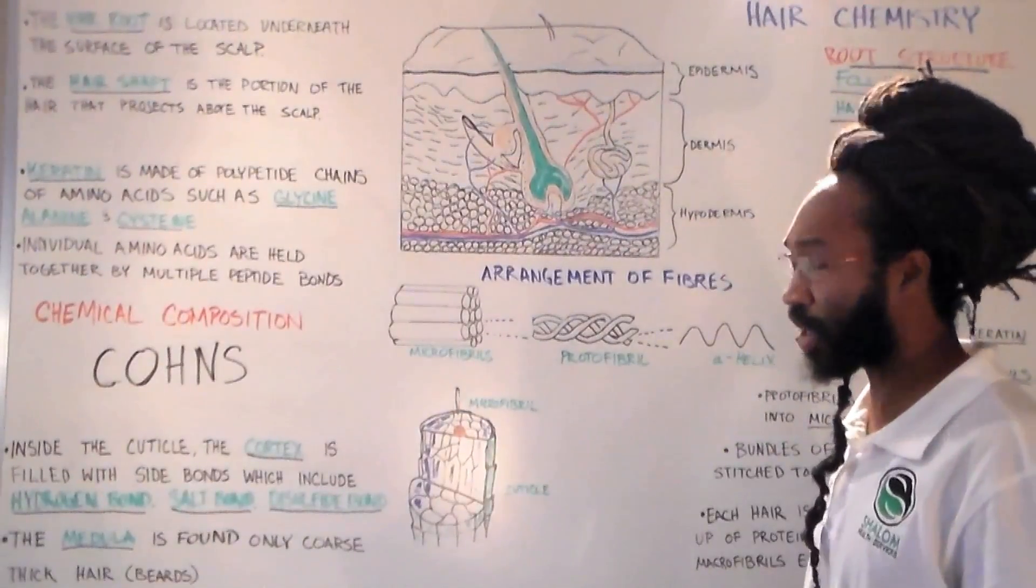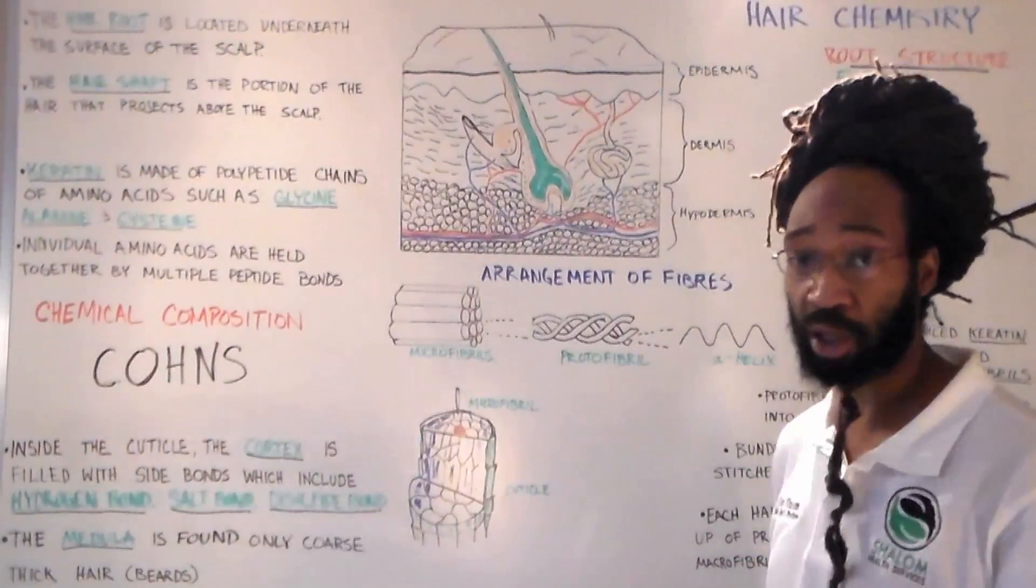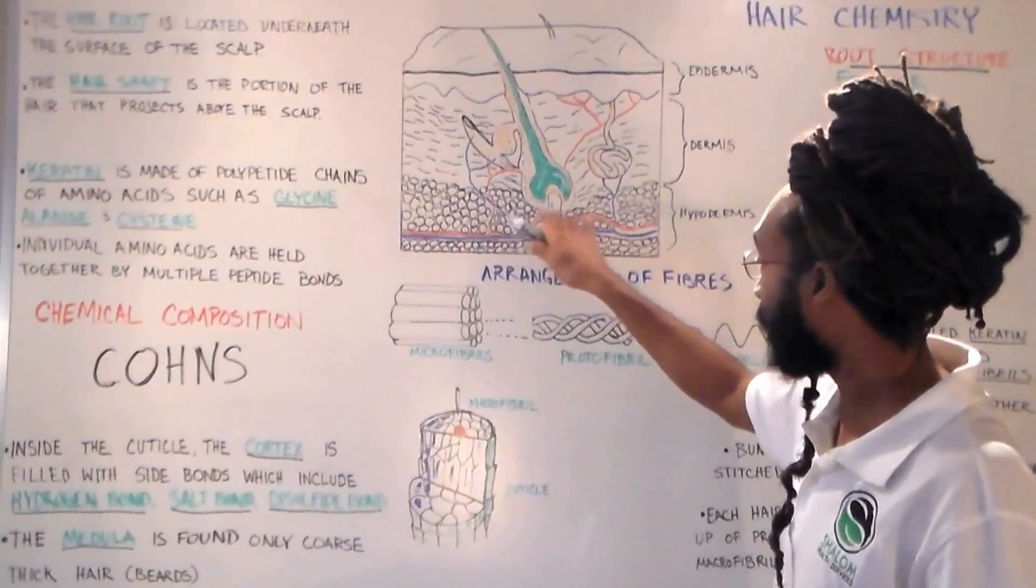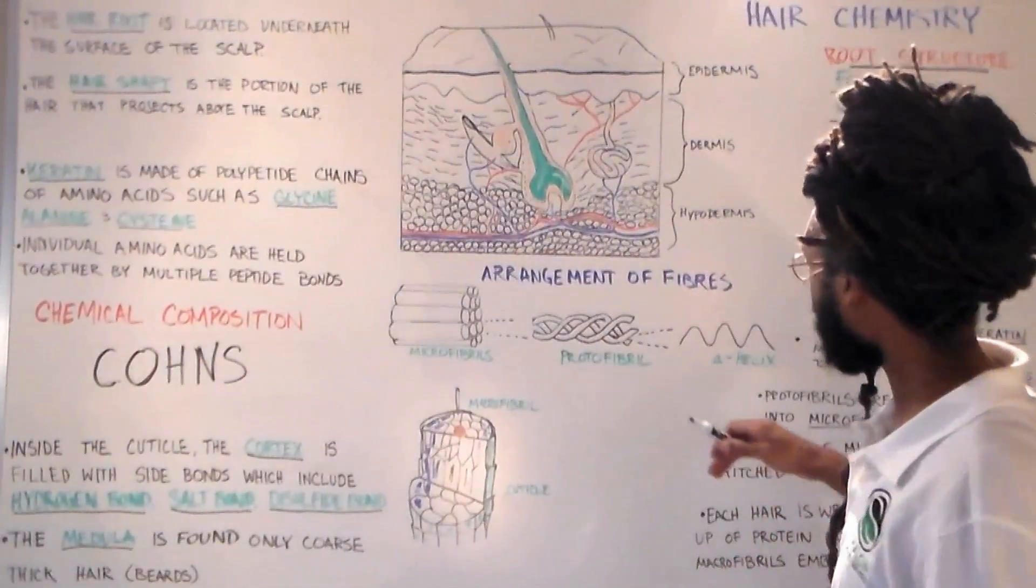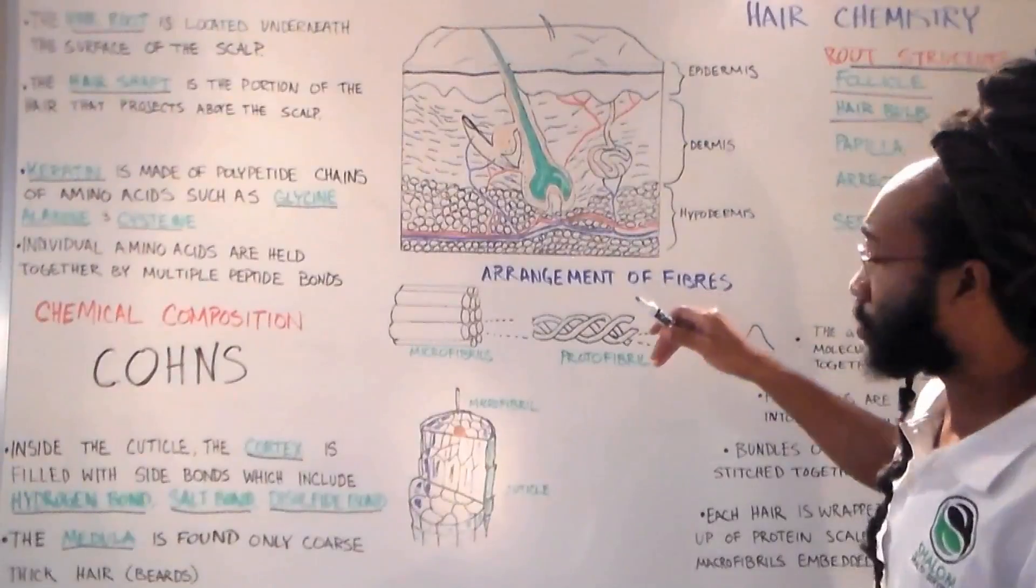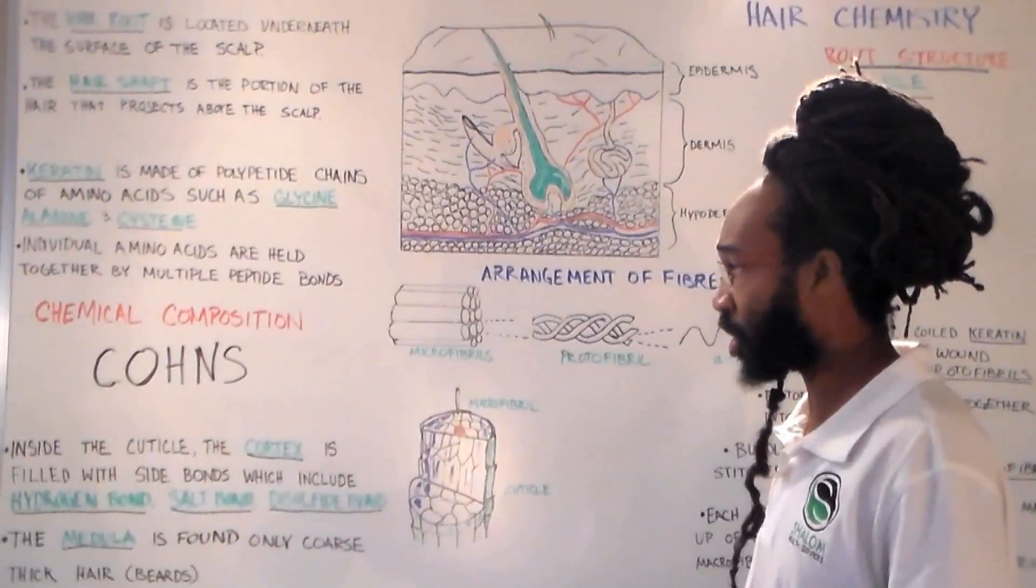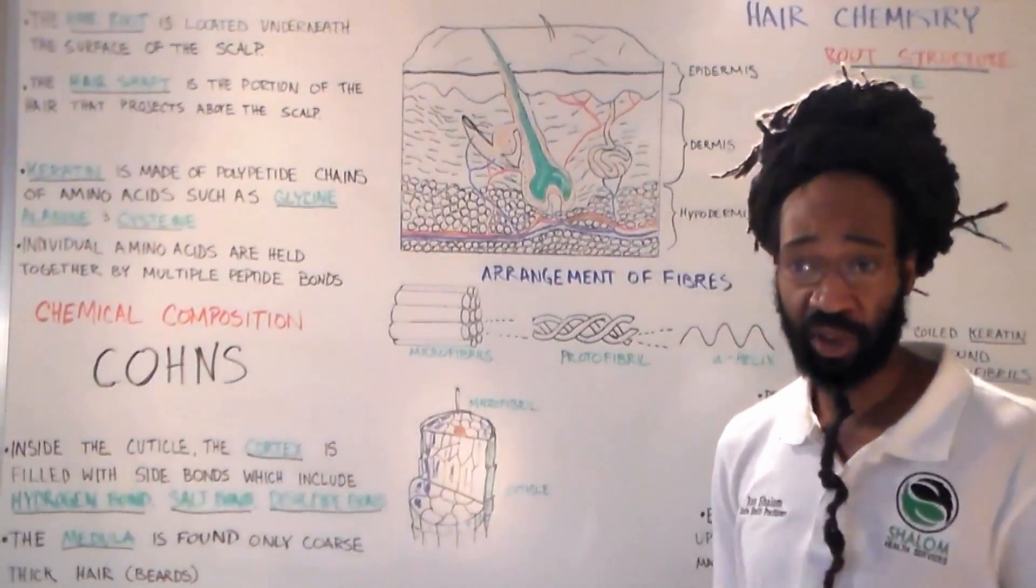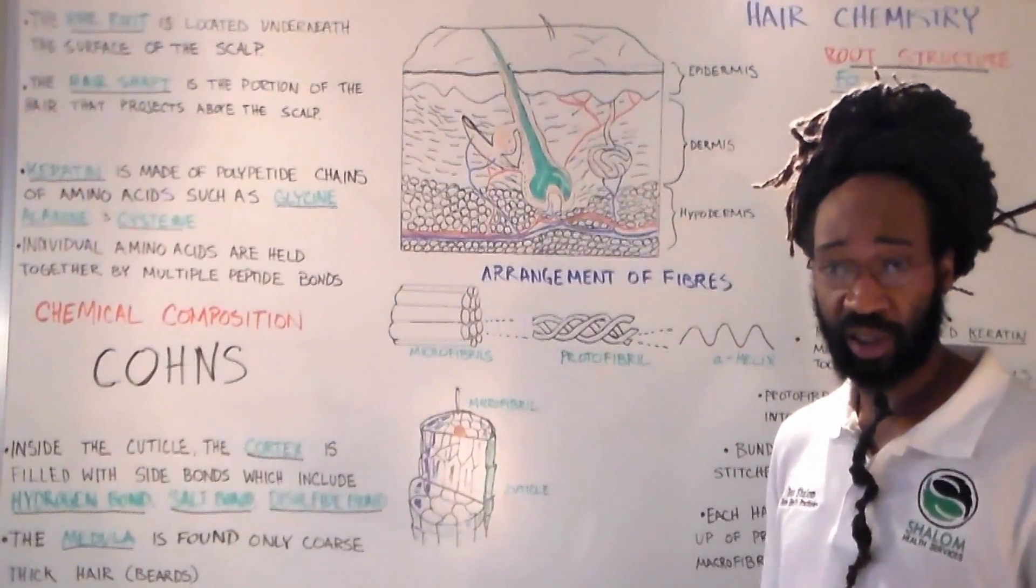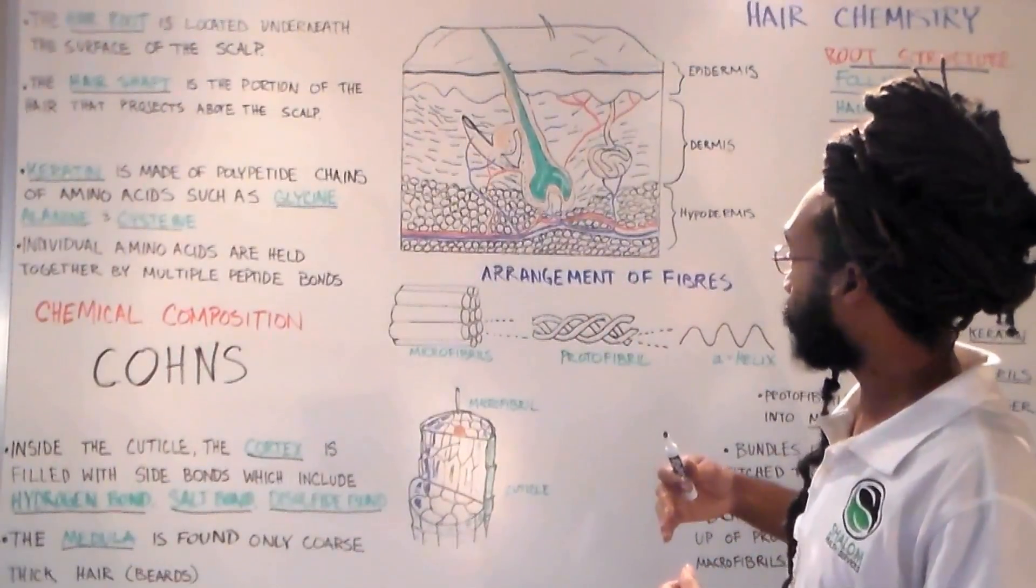It can get damaged easily by certain hormones that come across our blood in our hypodermis area. Now this is where those minerals we was just talking about, the carbon, oxygen, hydrogen, nitrogen, and sulfur, all of this is food for the growth of the hair.